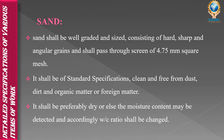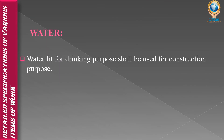For sand: the sand shall be well graded and sized. It should consist of hard, sharp, and angular grains and shall pass through a 4.75 mm square mesh sieve. It shall be clean and free from dust, dirt, and organic matter, and shall preferably be dry so that moisture content can be detected and it won't affect the water-cement ratio. For water: water fit for drinking purpose shall be used for this construction work.